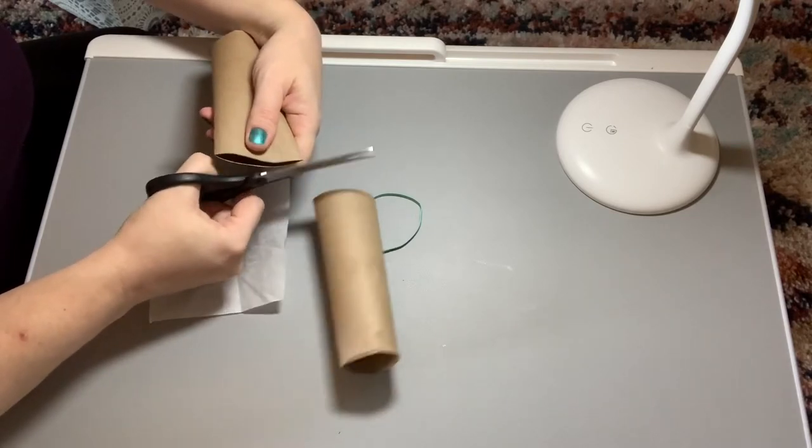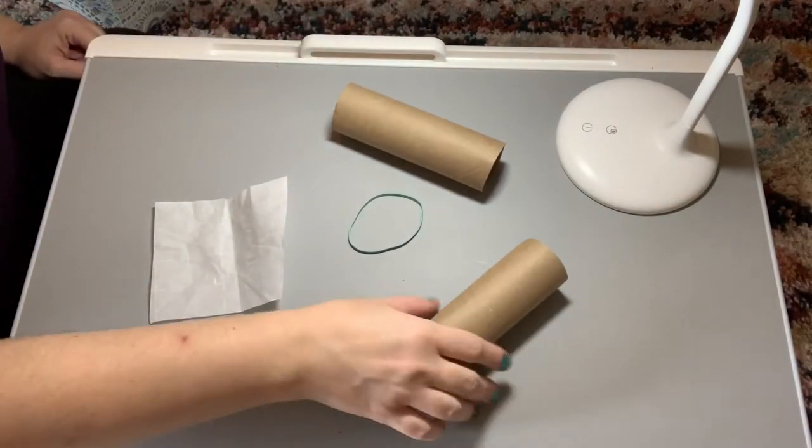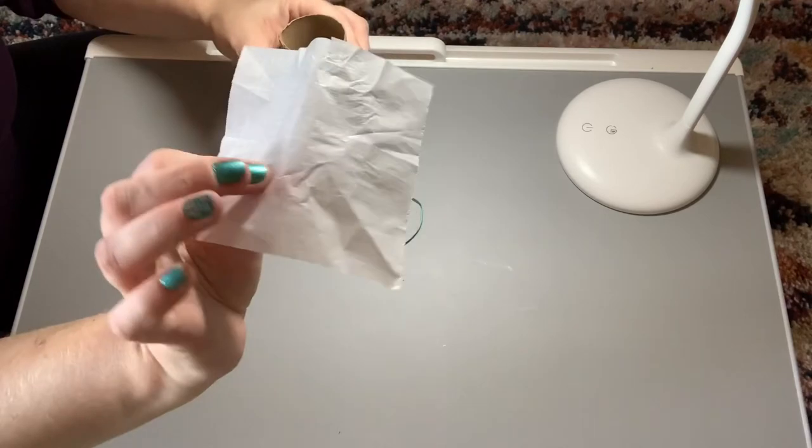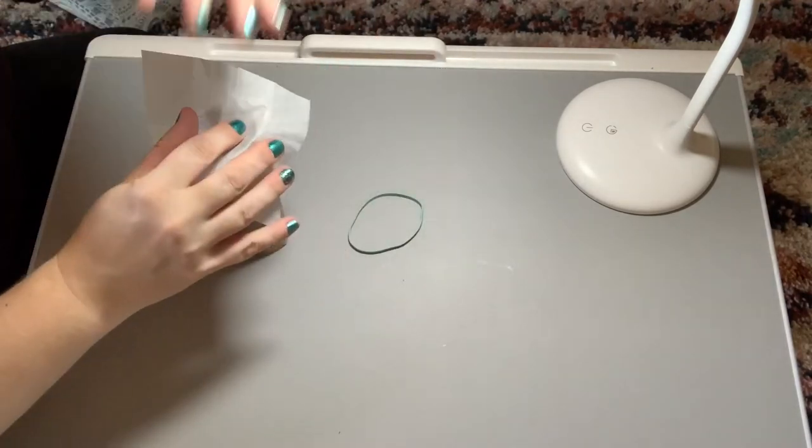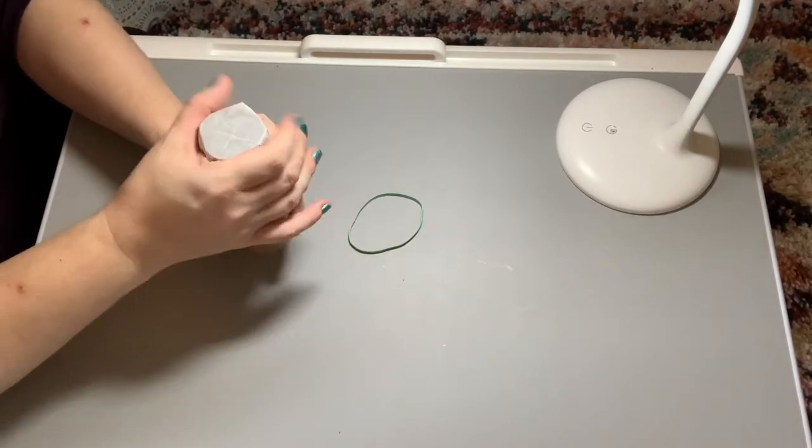So it's really as simple as putting your wax paper or your tissue paper over the top of the tube, pull it nice and smooth over the top, and then secure it with a rubber band.